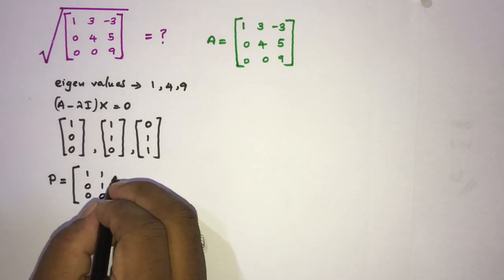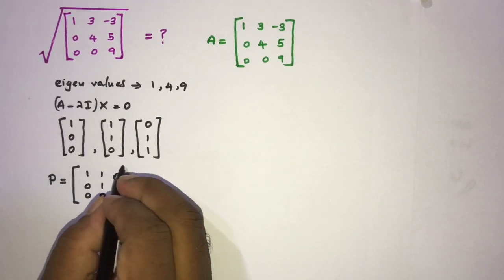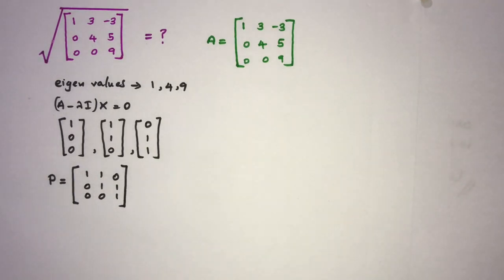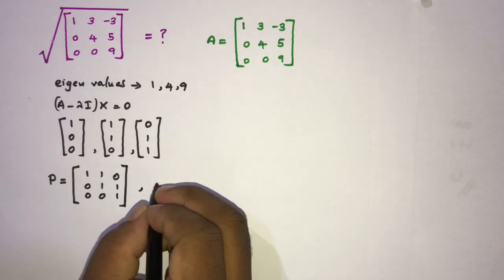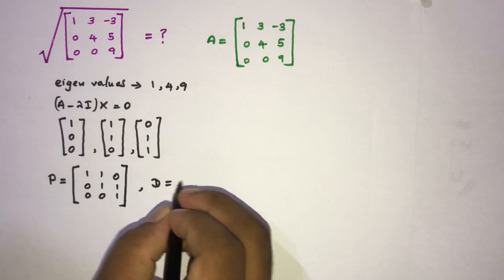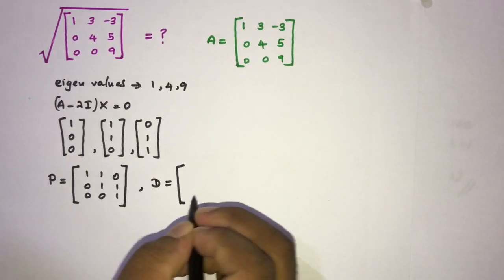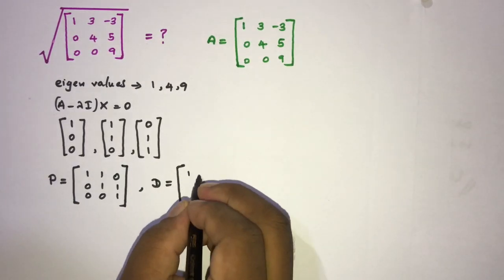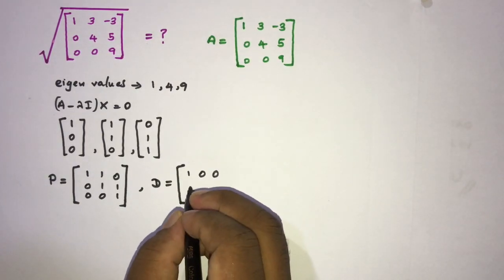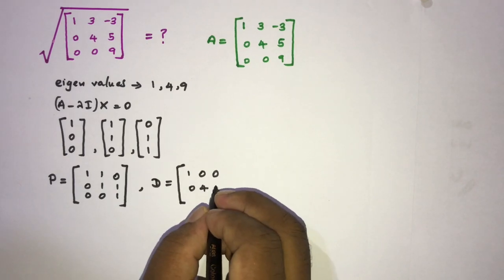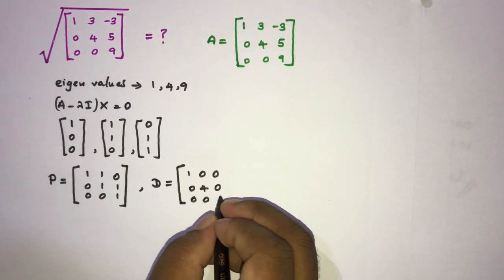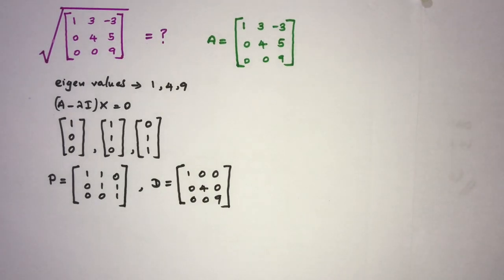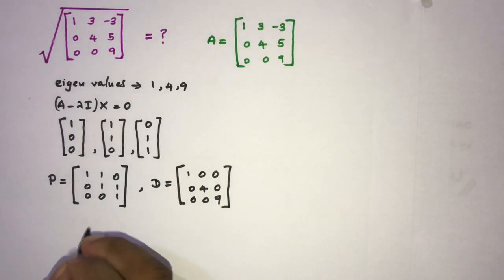Now we can write the diagonal matrix D, which is equal to the diagonal matrix with entries 1, 4, and 9 — that is, diag(1, 4, 9).